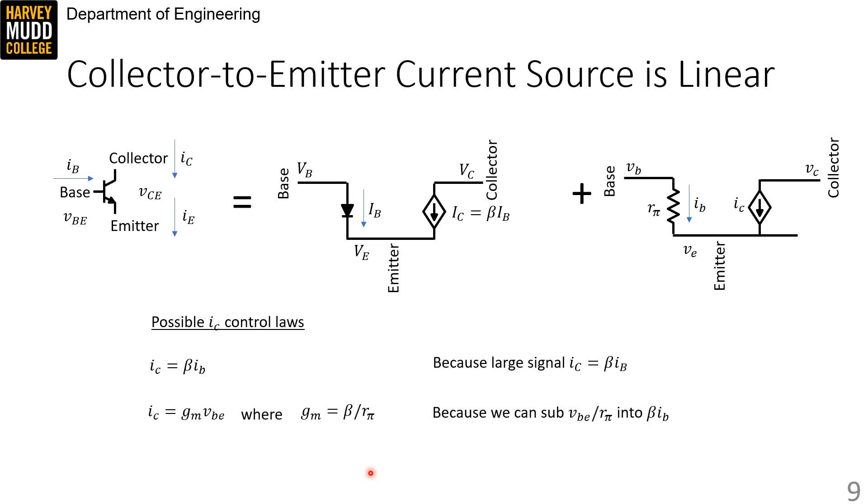However, it's common to think of amplifiers as having voltage inputs, so it's similarly common to express IC as the product of a transconductance GM and VBE. We find the transconductance by noting that GM times VBE must be equal to beta times IB, and that VBE is equal to IB times Rpi. We can substitute those equations together to note that GM is equal to beta over Rpi.